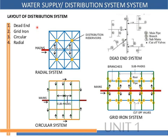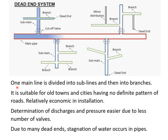The layout of the water distribution system can be categorized into four types: dead-end or tree system, grid-iron system, circular or ring system, and radial system. In the dead-end system, one main line is divided into sub-lines and then into branches. It is suitable for old towns with no definite road pattern and is relatively economical to install. Determination of discharges and maintenance of pressure is easier due to fewer valves. However, due to many dead ends, stagnation of water occurs in pipes, which may lead to contamination.